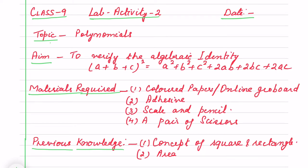Good morning children. Here I have taken lab activity of polynomial chapter. The identity is (a+b+c)² = a²+b²+c²+2ab+2bc+2ac.